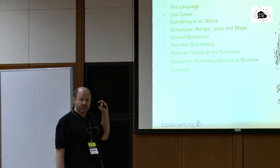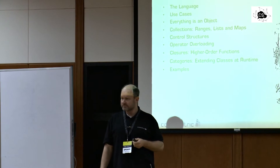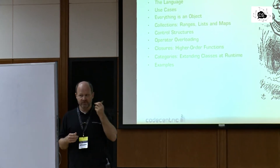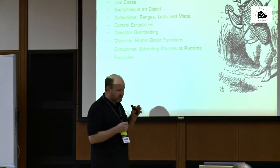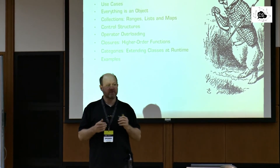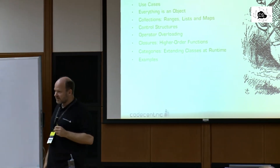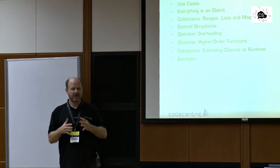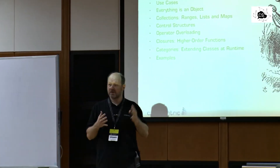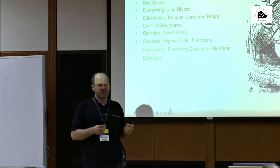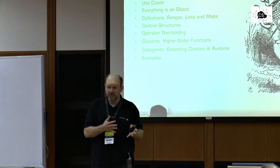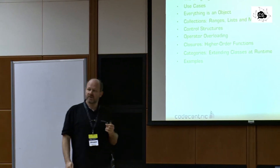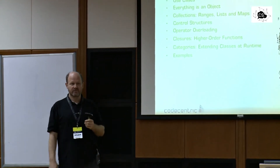Then operator overloading — you know from Java that there is no operator overloading. Groovy introduces this. There are tricks like call-site caching and so on. The newest versions of the virtual machine have instructions that allow dynamic languages like Groovy, JRuby, Jython, and so on to be extremely fast — comparable to normal Java with maybe a factor of 1.5 — and still keep the whole dynamic aspect on a normal virtual machine.